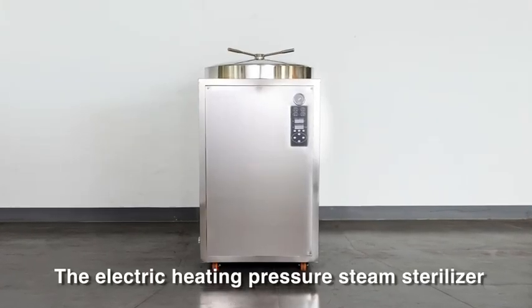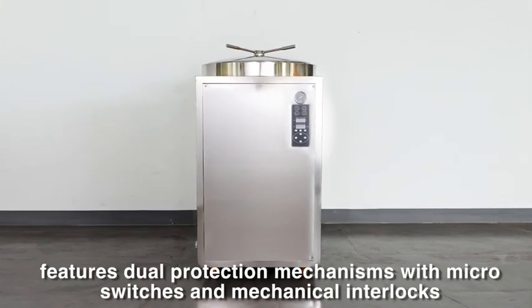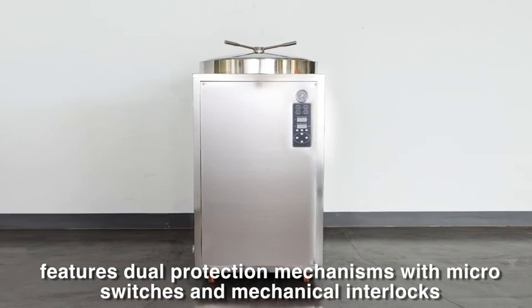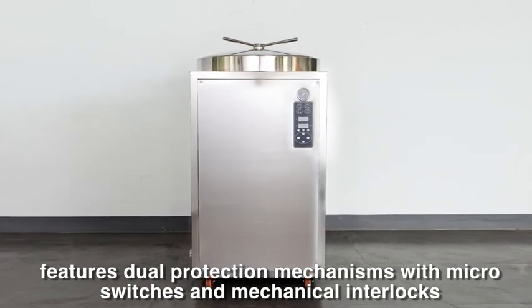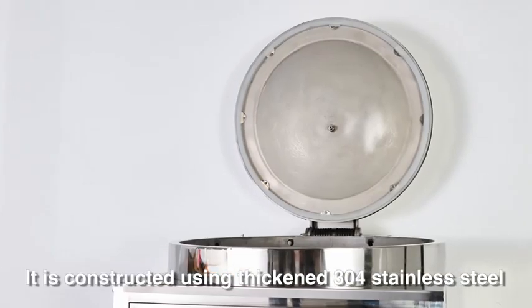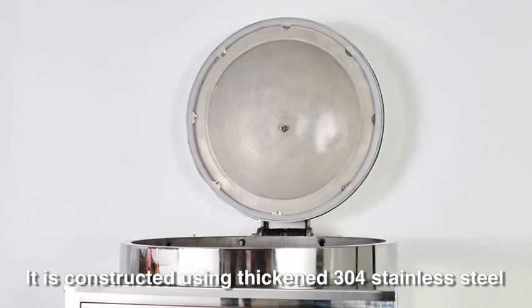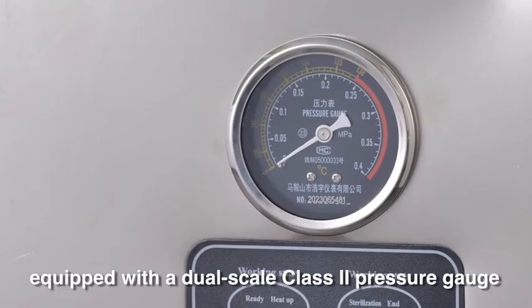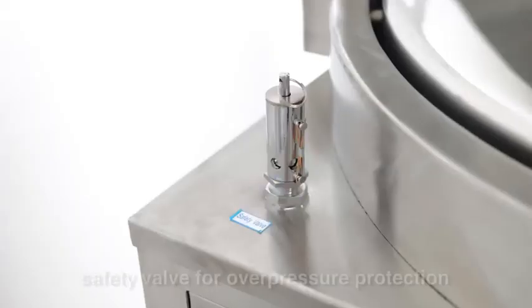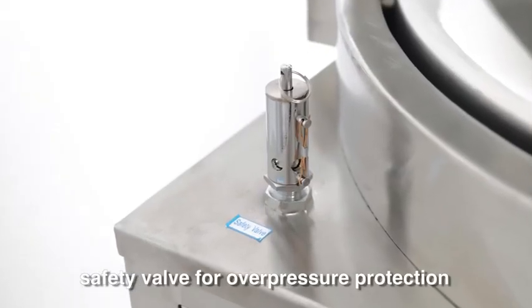The Electric Heating Pressure Steam Sterilizer features steel protection mechanisms with micro switches and mechanical interlocks. It is constructed using thickened 304 stainless steel, equipped with dual scale class 2 pressure gauge, and safety valve for overpressure protection.